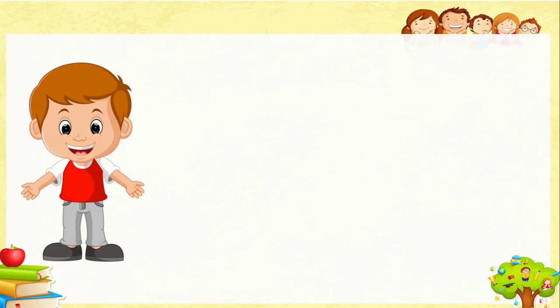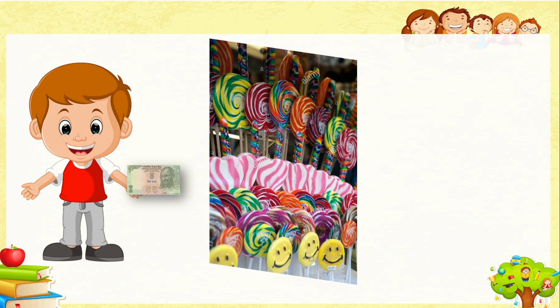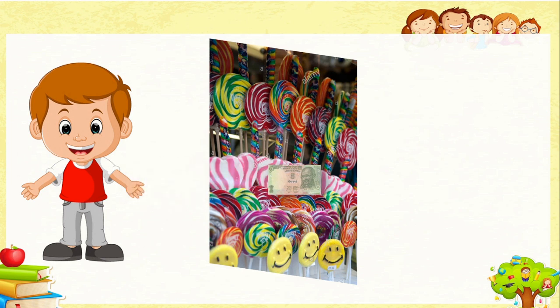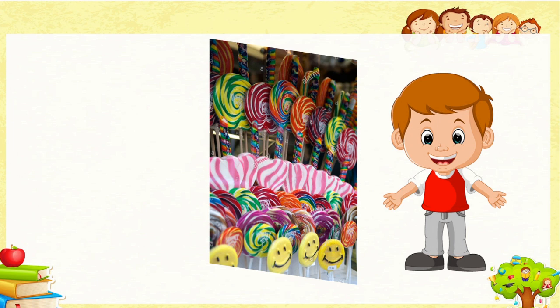Here one boy is there. He is having a five rupee note — mother gave him five rupees. He saw a lollipop shop and wanted to buy a lollipop. He went to the shop and asked the cost. The shopkeeper said one lollipop costs rupees five. The boy gave five rupees to the shopkeeper and purchased one lollipop.